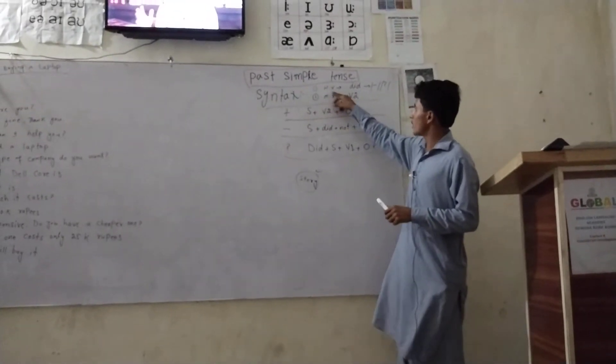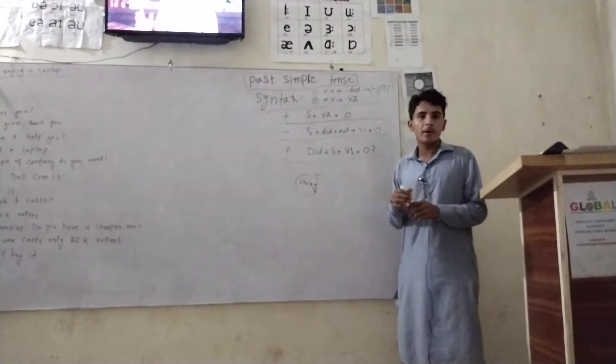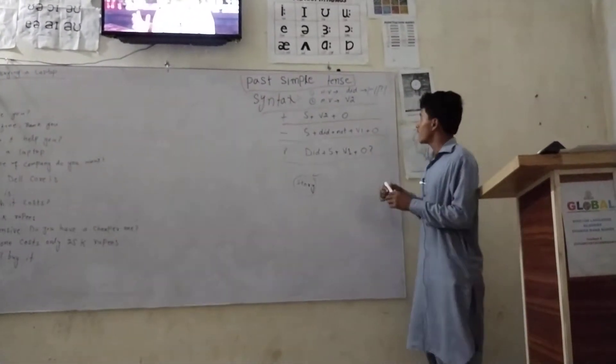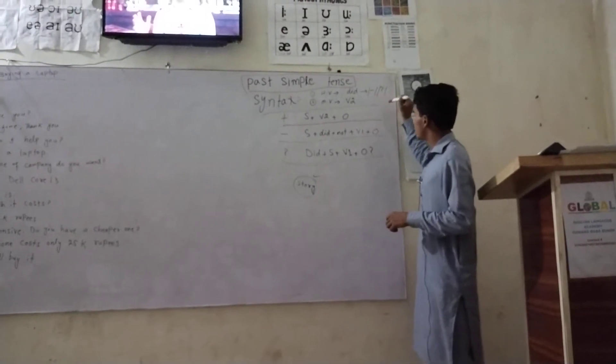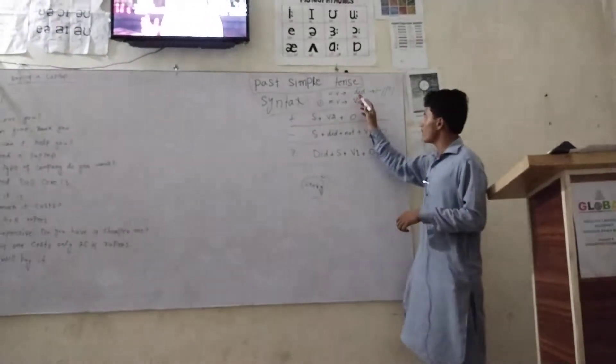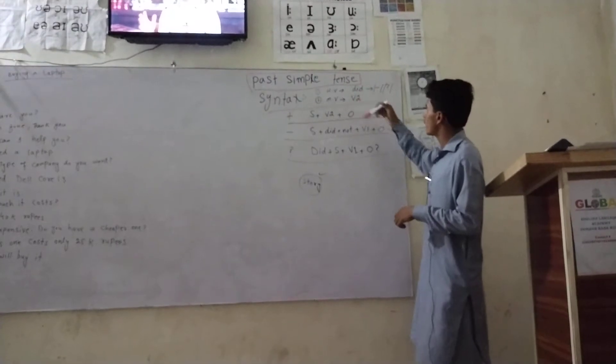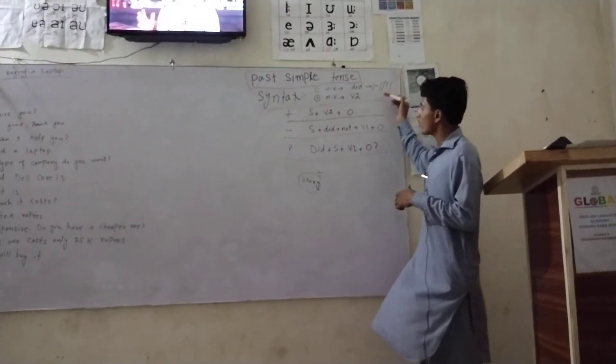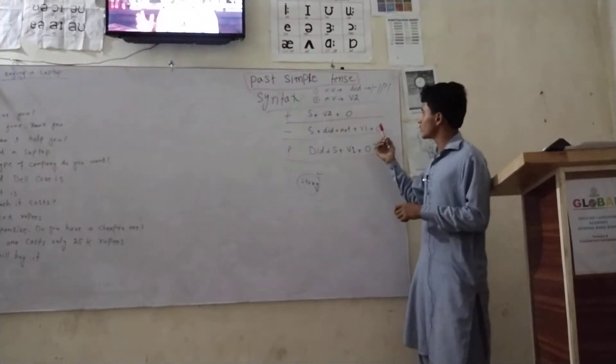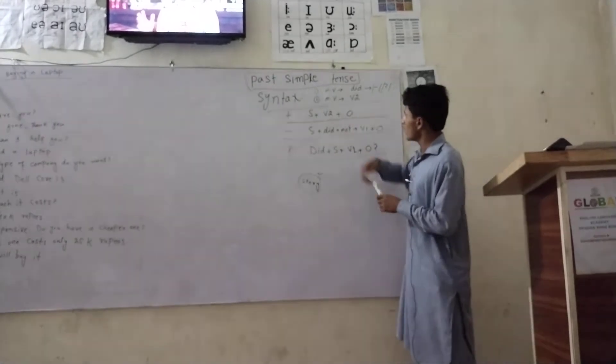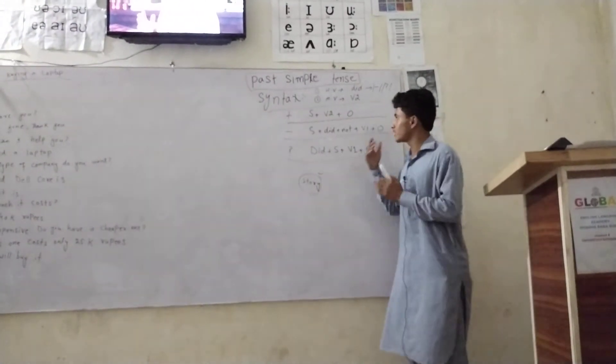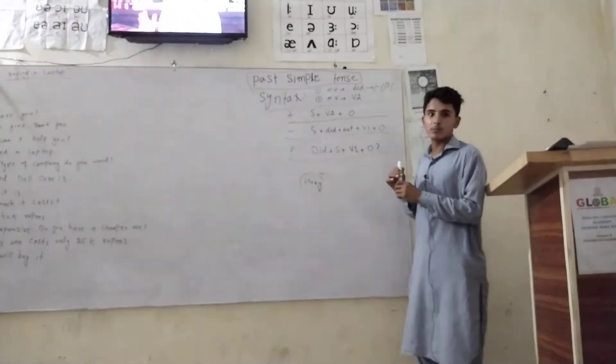Keep in mind, there is no helping verb in positive sentences. In negative sentences and interrogative sentences, 'did' is the helping verb. There is no helping verb for positive sentences. For the main verb, we use the second form of the verb in this tense.